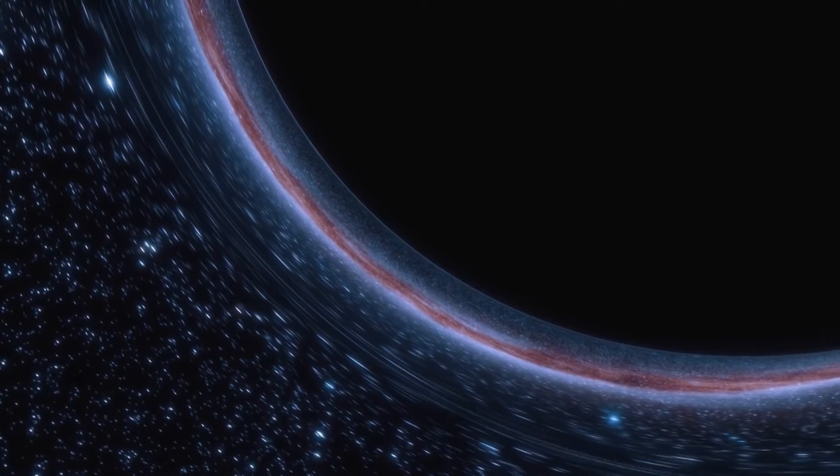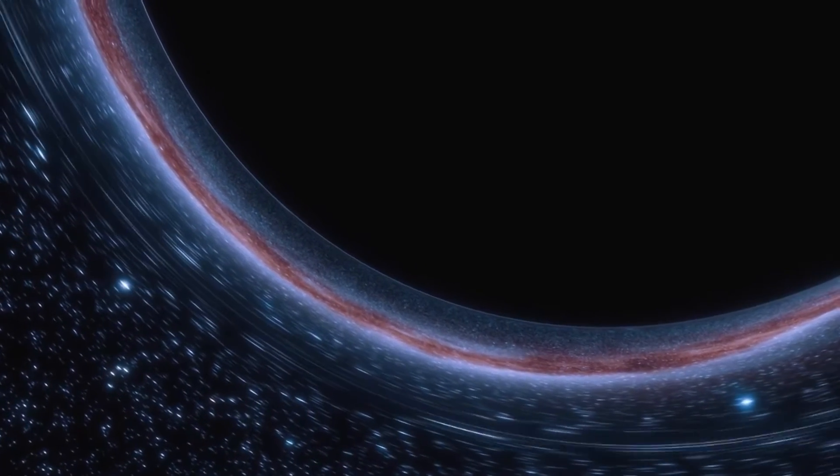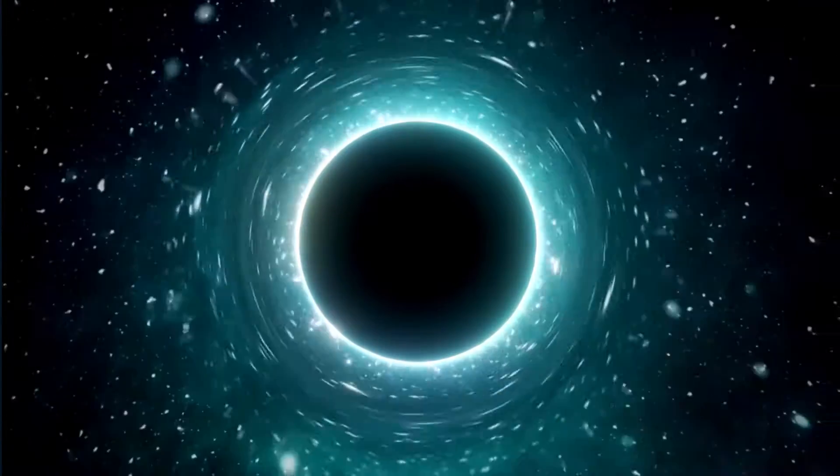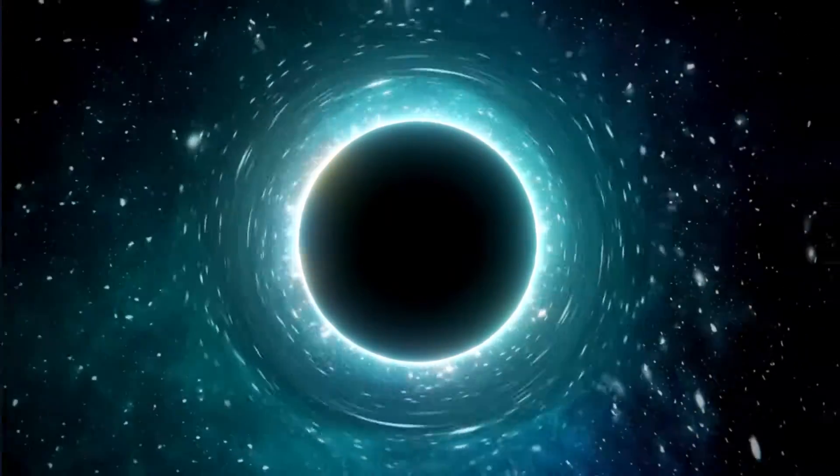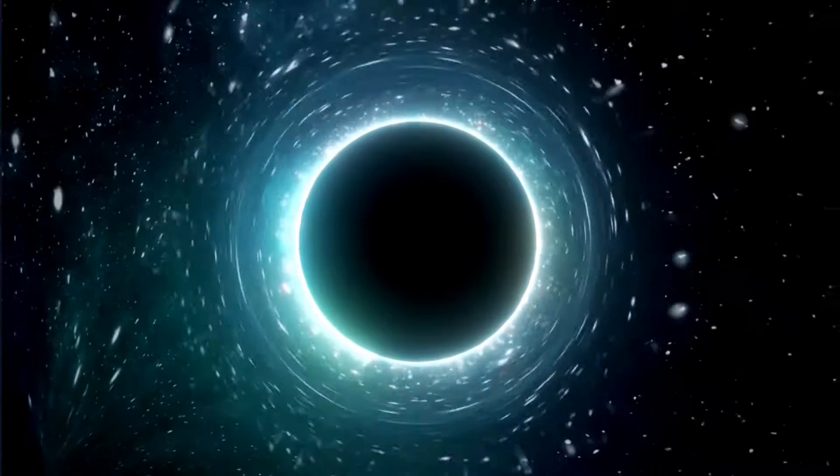The black hole event horizon was replicated in the lab by using a line of atoms in a single file. Hawking radiation, which is made up of particles formed as a result of disruptions in quantum fluctuations brought on by the black hole ripping spacetime, gave out a visible glow.